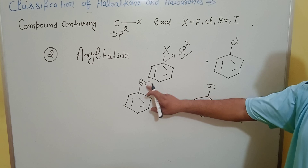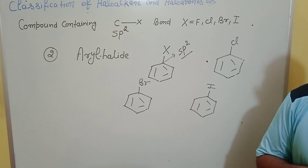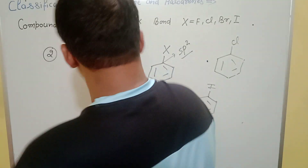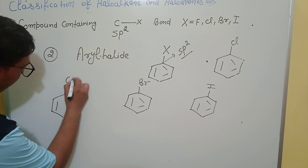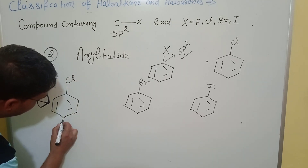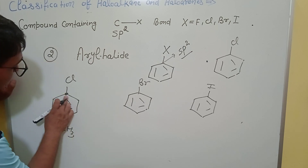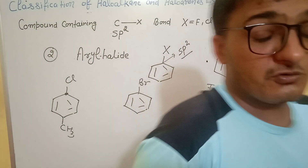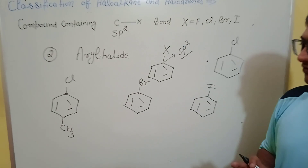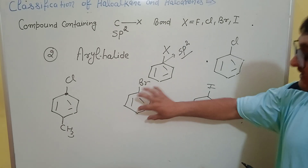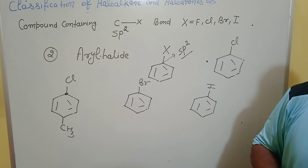When the carbon containing the halogen is sp2 hybridized, it is an aryl halide. For example, benzene reacted with a halogen: the carbon attached to the halogen is part of the benzene ring with carbon-carbon double bonds, so that carbon is sp2 hybridized. Due to the benzene ring, this compound is named aryl halide.